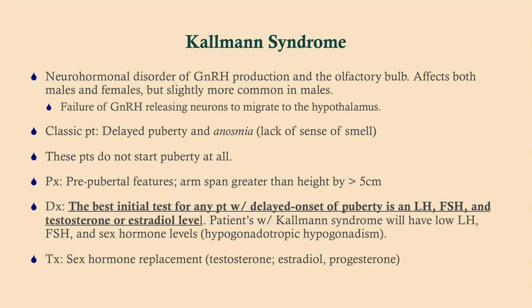Kallmann syndrome — this is classically tested on Step 1 because it has a classic duet of delayed puberty and anosmia. A 13-year-old boy or girl who has not started puberty (Tanner stage 1) and can't smell anything — that's Kallmann syndrome. It can follow various genetic inheritance patterns. Basically, the GnRH-releasing neurons do not migrate properly to the hypothalamus — they develop at the olfactory bulb, which is where we get the anosmia. The classic presentation is delayed puberty. Get an LH, FSH, and testosterone or estradiol level; the treatment is sex hormone replacement timed to when they're supposed to hit puberty.